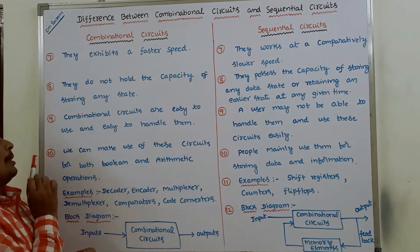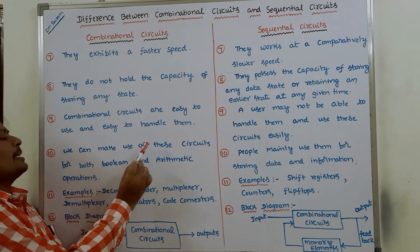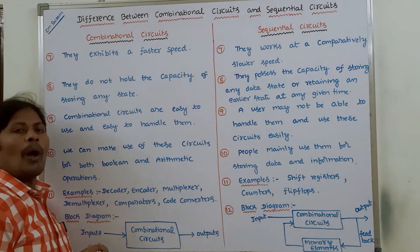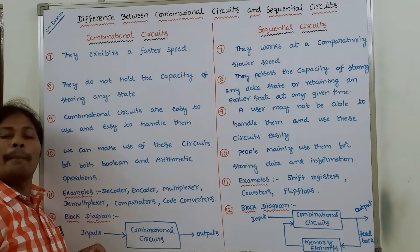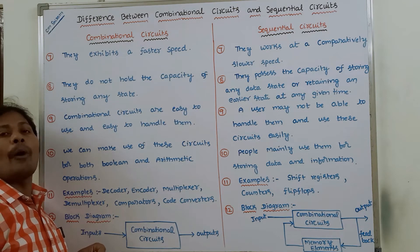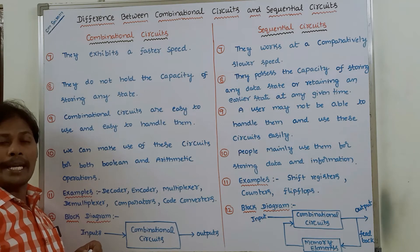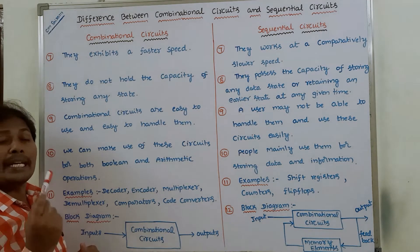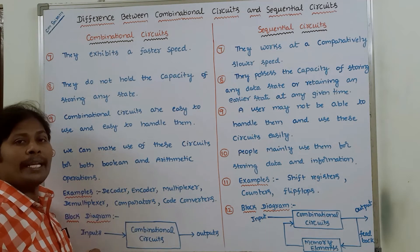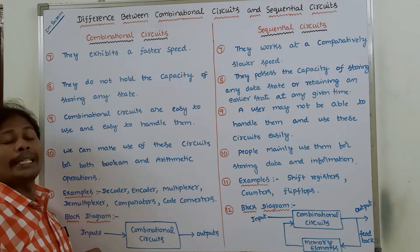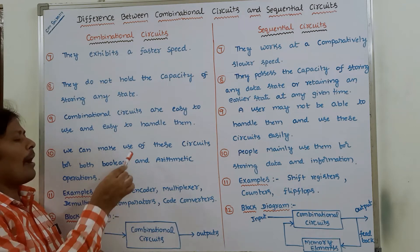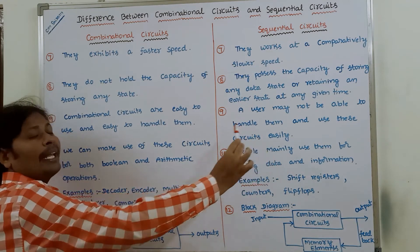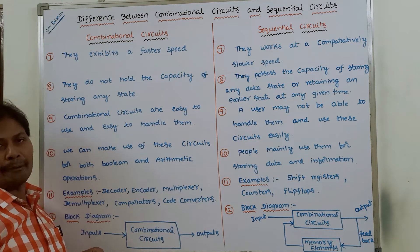Tenth point: we can make use of combinational circuits for both boolean and arithmetic operations. Combinational circuits are mainly used for performing arithmetic operations and boolean operations. Whereas sequential circuits are mainly used for storing data and information.